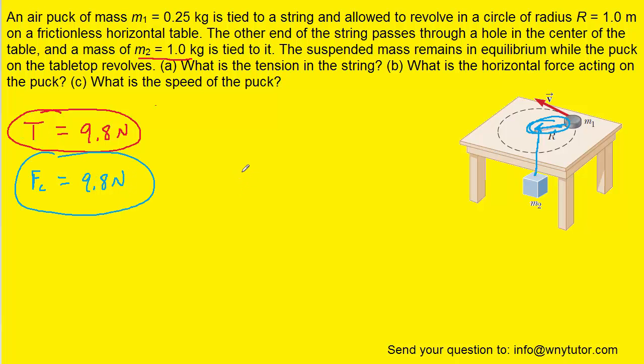We know that the centripetal force equals mass times speed squared divided by radius. We can calculate the speed by first multiplying both sides of this equation by R, dividing both sides by the mass M, and then taking the square root of both sides.